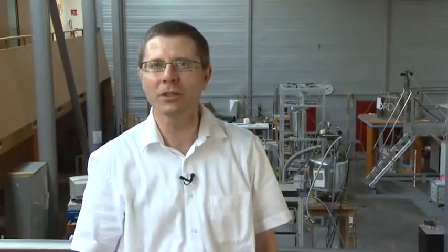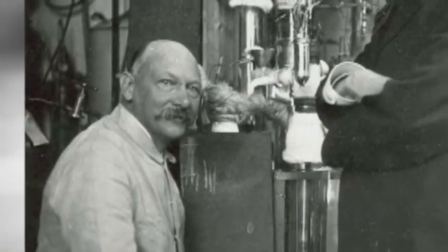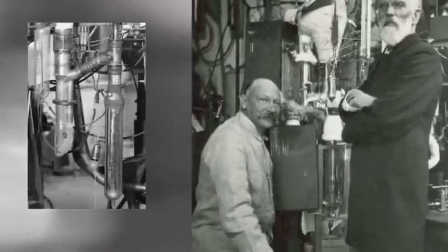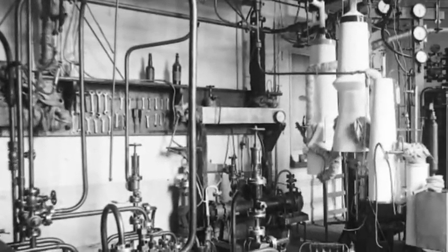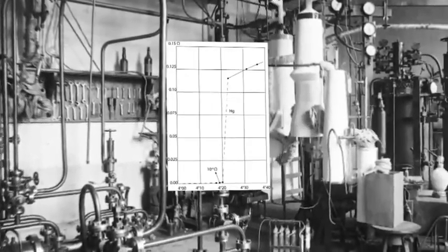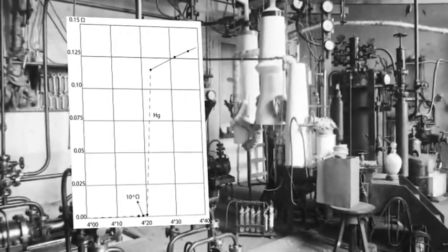2011 is a very important year for superconductivity. Since one century ago, the Dutch scientist Heike Kamerlingh Onnes discovered superconductivity April 8th, 1911. He discovered that the resistivity of mercury disappeared completely under 4.2 Kelvin.